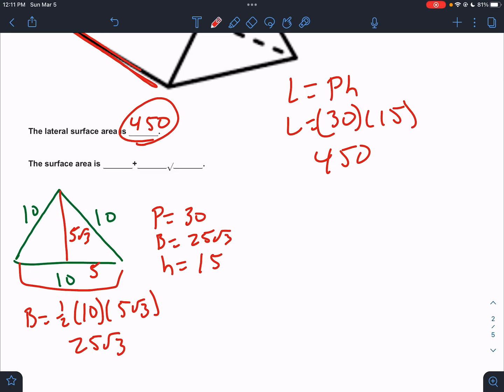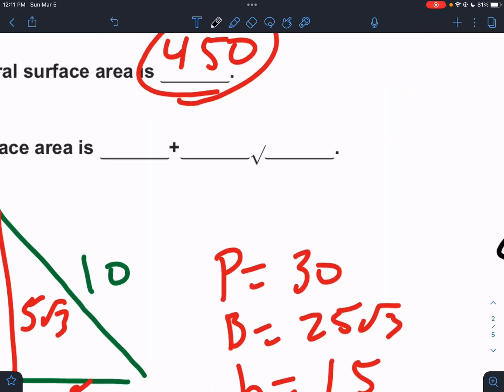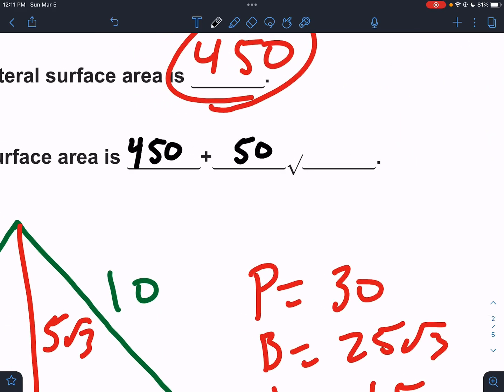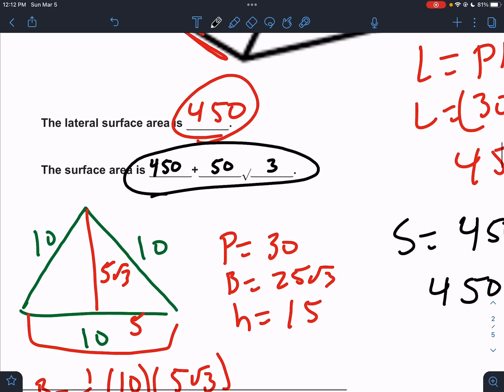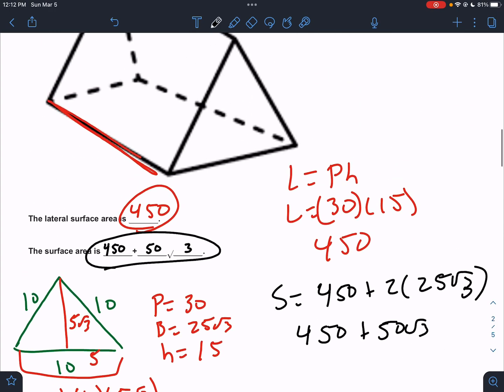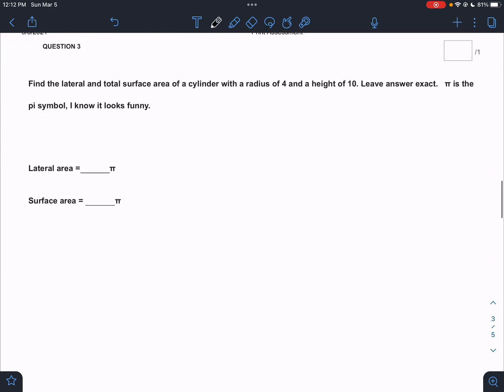Now, for the second part, the total surface area, it's going to be that number, 450, but then we have to add in two bases. Two times 25 root 3. So that would be 450 plus 50 root 3. 450 plus 50 root 3 would be the total surface area. So let's get real good at those triangle problems. They're going to come up a lot.